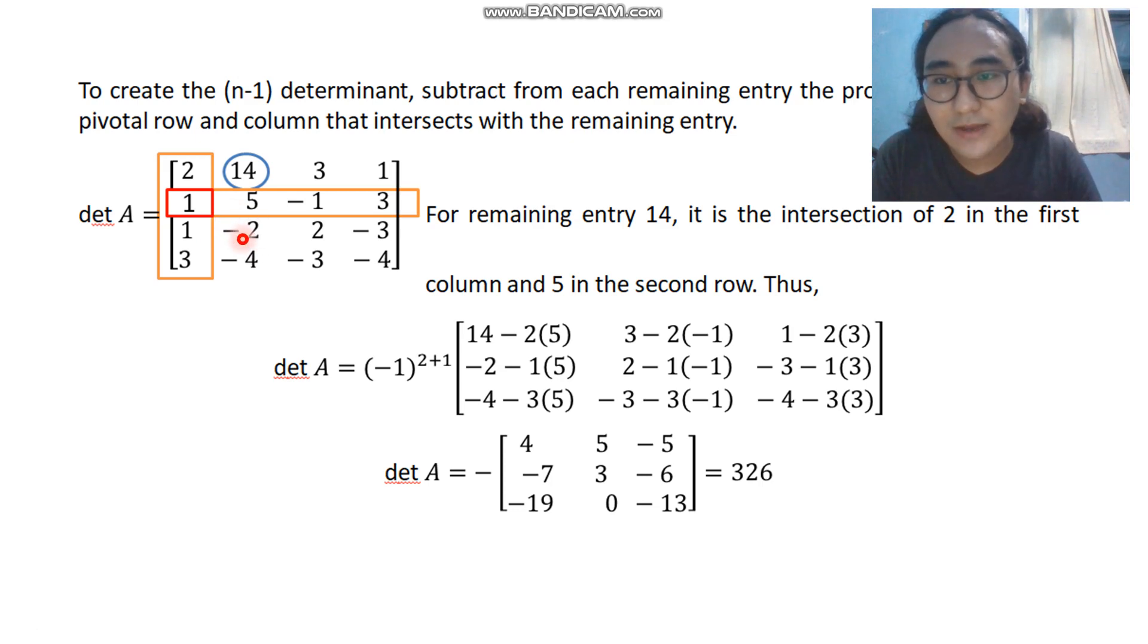Here we have negative 2. The numbers that it intersects with will be 5 and 1. So negative 2 minus the product of 1 and 5. So we have 3 here. The numbers that it intersects with will be 2 and negative 1. So 3 minus 2 times negative 1.